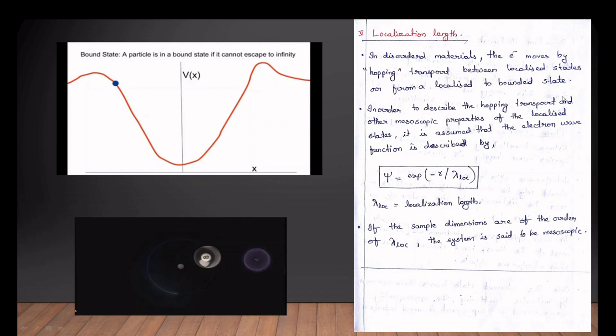We are going to represent a potential distance. The next thing is localization — localized states are represented by the electron transport, with psi equal to e raised to minus r by lambda_loc. These are the 5 different characteristic length parameters of the mesoscopic system.